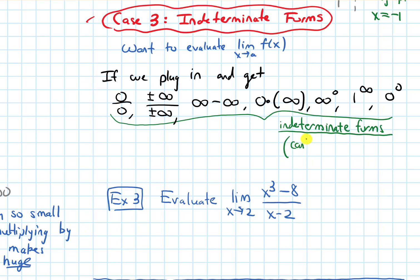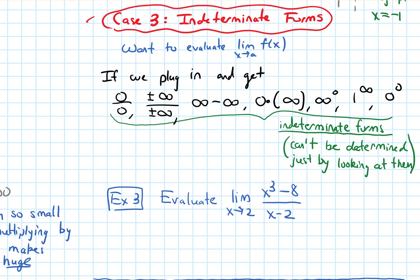Indeterminate means can't be determined — they can't be determined just by looking at them. So the moral is, if you plug in and you get one of these indeterminate forms, we must simplify first. We can't just tell what's going on by looking at it, so we've got to simplify, and maybe after simplifying we'll be able to tell. This is the case that shows up most often.